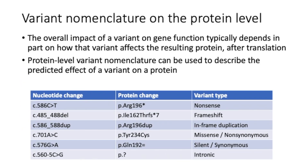The overall impact of a variant on a gene typically depends on how that variant affects the resulting protein after translation. For coding regions within a gene, each variant named at the nucleotide level can also be named at the protein level. Nucleotides are grouped into consecutive sets of three within the coding regions, called codons. The three nucleotides within each codon code for one amino acid that will be incorporated into the protein synthesized during translation. Protein level naming is denoted by a P dot at the beginning of the variant instead of nucleotide level naming, which is denoted by a C dot. The numbering in the protein level name corresponds to the amino acid residue in a protein that is impacted by the underlying nucleotide level change.